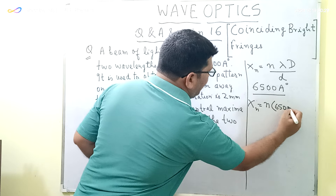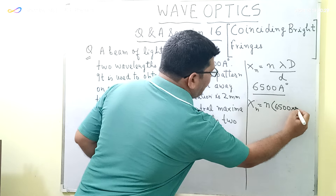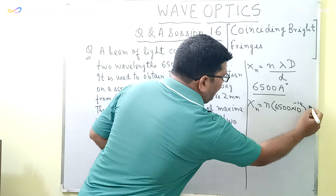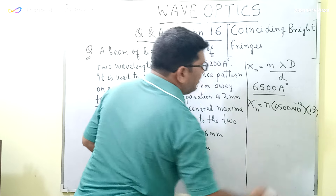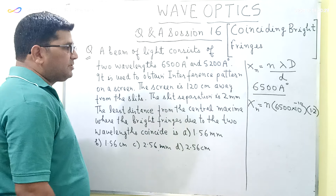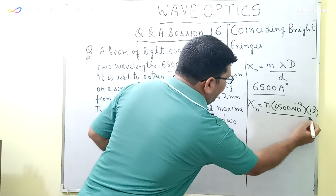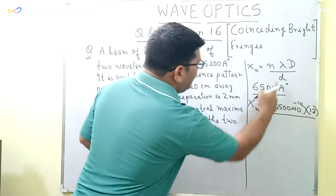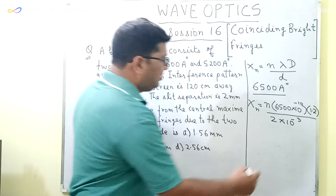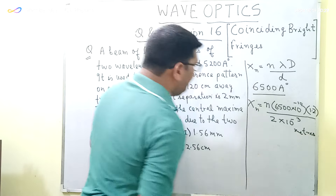For the beam of light of wavelength 6500 angstrom, x_n = n × 6500 × 10⁻¹⁰ meters × 1.2 (converting D = 120 cm to 1.2 m), divided by d = 2 mm = 2 × 10⁻³ meters. This gives the distance of the nth bright fringe from the central maxima in meters.